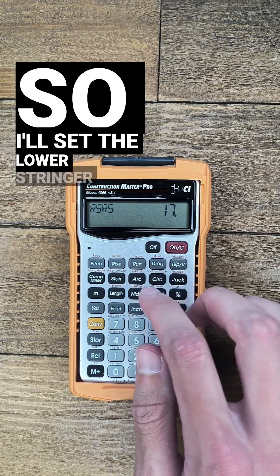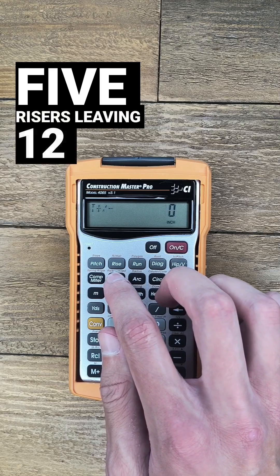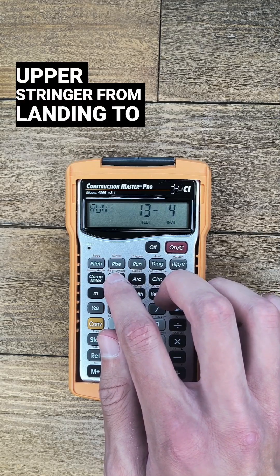So I'll set the lower stringer as 5 risers leaving 12 for the upper stringer from landing to top floor.